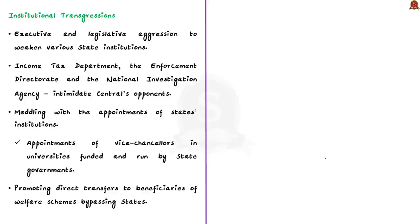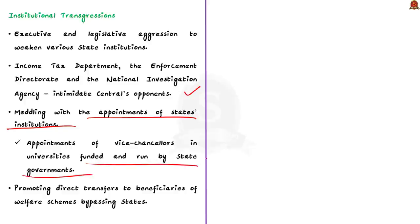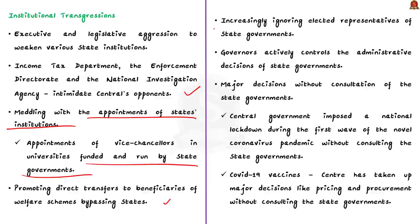Next, the author addresses institutional transgression. The union government has been using executive and legislative aggression to weaken various state institutions. Central institutions like the income tax department, the Enforcement Directorate and the National Investigation Agency are being used to intimidate the center's opponents. The center is also meddling with appointments of vice chancellors in state-funded universities. It is also promoting direct transfers to welfare scheme beneficiaries bypassing the states, and increasingly ignoring elected representatives — for example, holding meetings with state secretaries and district collectors without elected representatives of state governments.